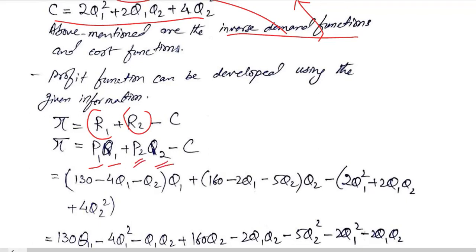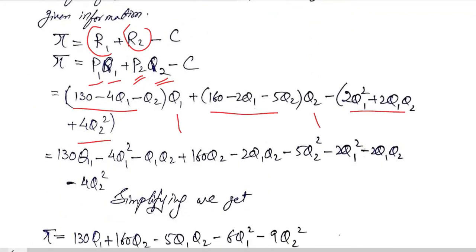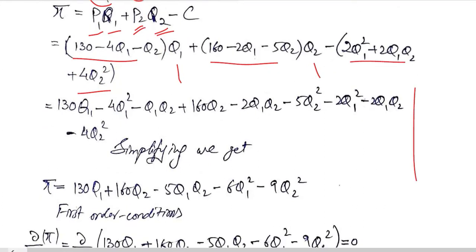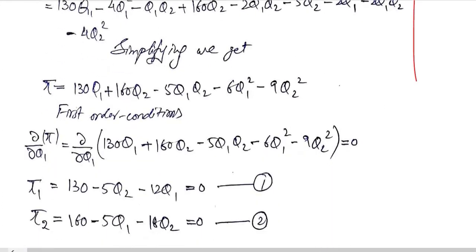We have done it here. By putting these values, this is P1, this is P2, and this is the cost function. Q1 and Q2 are being multiplied to make P1 and P2 into R1 and R2. You can simplify this expression and see if this is the profit function we get after simplification.